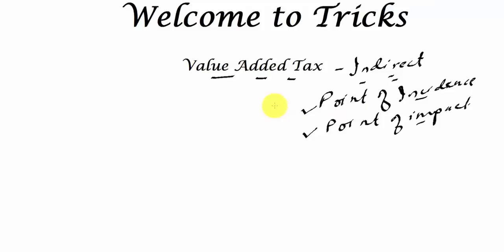For example, when you buy anything there is written in the label inclusive of all taxes. It means when you are buying something, the taxes are included in the cost of that product. So ultimately the consumers are paying the taxes which is included in the cost of that product. That is the point of impact, where the actual impact of taxes are felt.